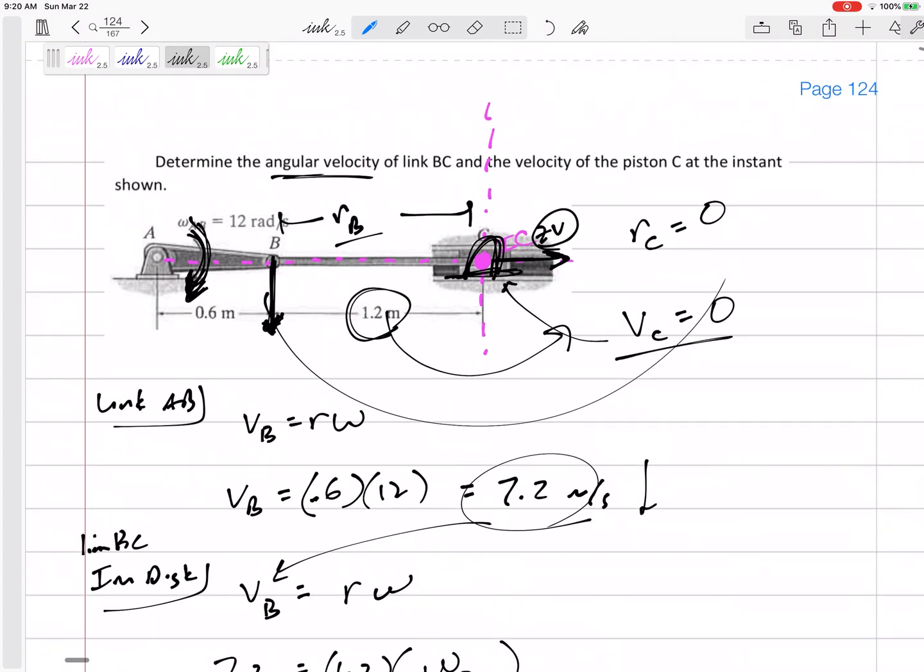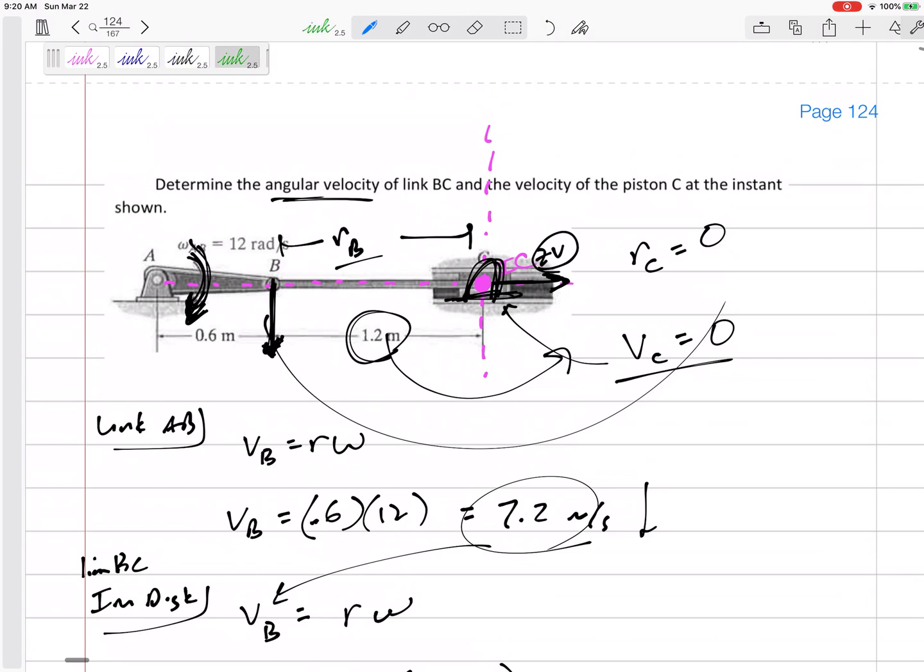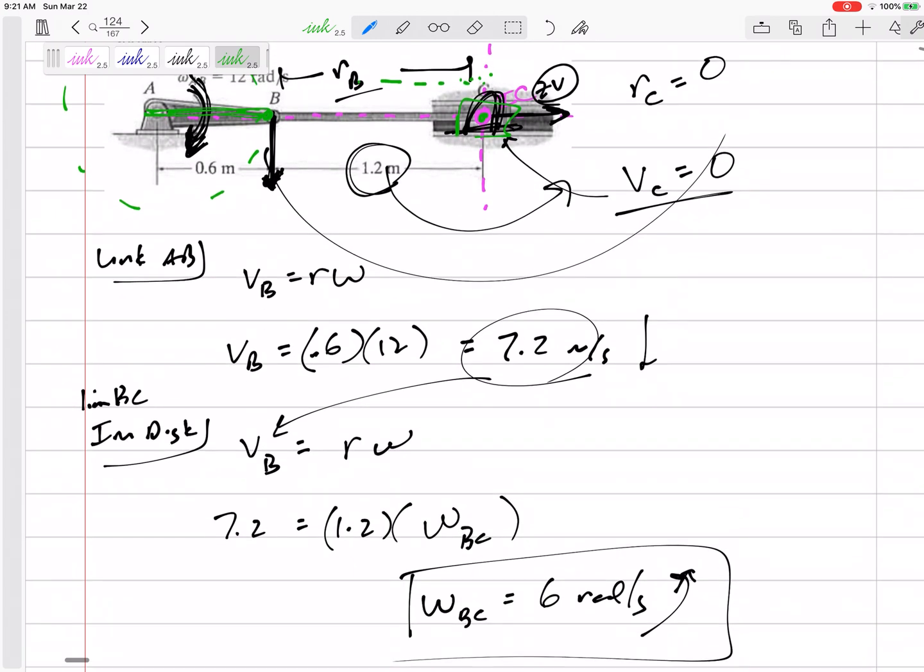Now, does this make sense that the velocity would be C at this instant? Think about this link as it is going around in a circle when it's at this point. C has gone as far to the right as it can go. And it's about to start going back, right? And so that makes sense that the velocity is zero right here. Cause at this point, C in this slot has gone as far to the right. It was going with the velocity to the right. It's about to start going with the velocity to the left. So yeah, my velocity is zero for that point.